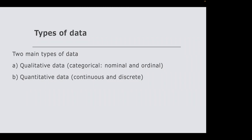Ordinal data is still categorical and qualitative, but you can order it in a meaningful way. For example, ordering body parts from ankle to knee to hip gives a sequence — ankle is one, knee is two, hip is three. There is an element of order, but it is still data you cannot divide, add, or find the average for, because it remains categorical.